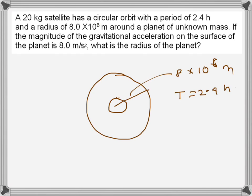We are also given the gravitational acceleration lowercase g on the surface of the planet, which is 8 m/s², and the mass of the satellite is given.